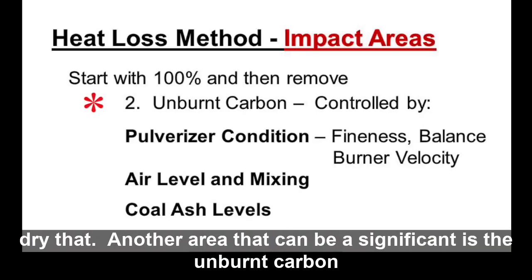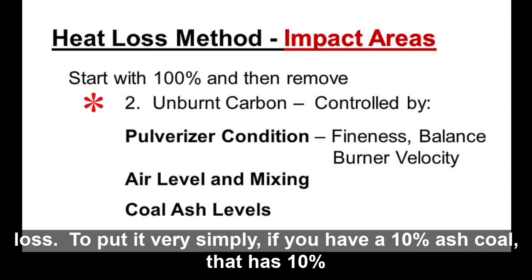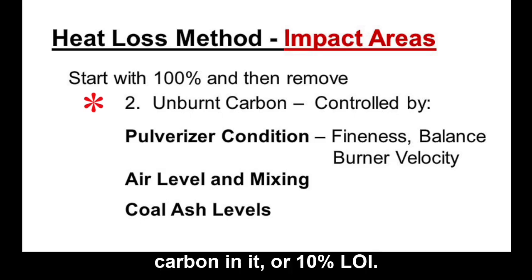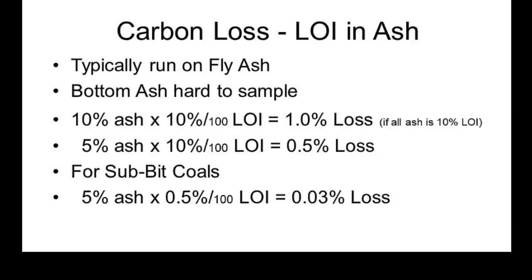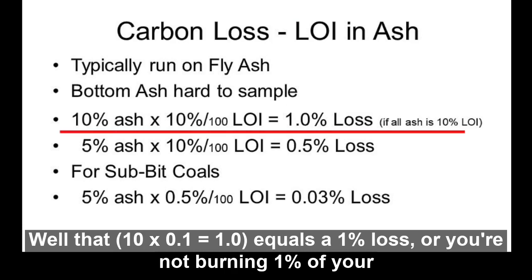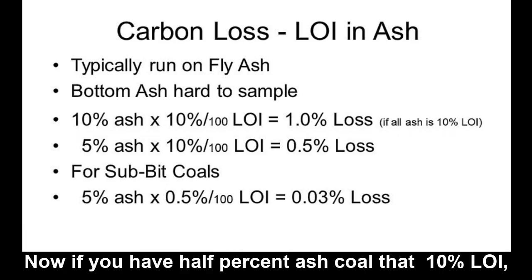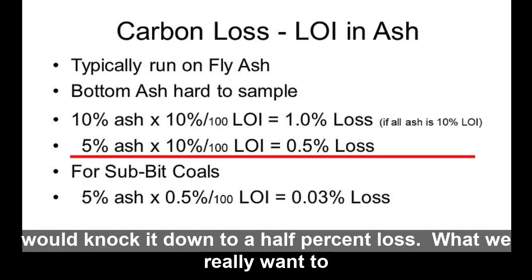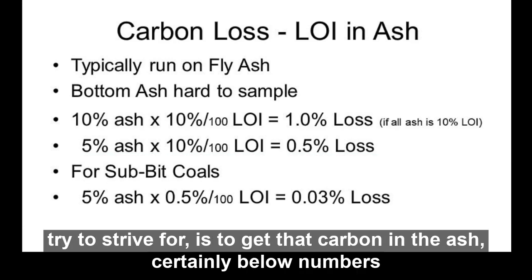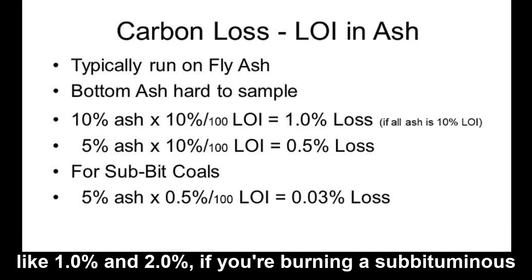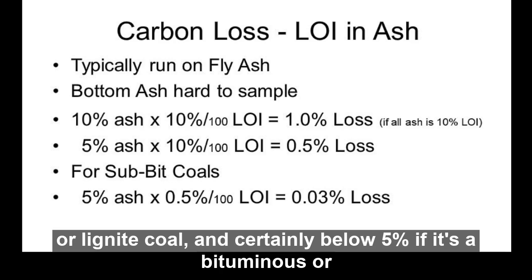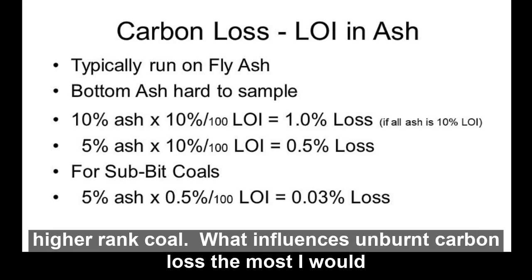The unburnt carbon loss is significant. To put it simply: if you have a 10 percent ash coal with 10 percent LOI, that's 10 times 0.1 equals a one percent loss — you're not burning one percent of your coal. If you only have five percent ash coal, that same 10 percent LOI drops to a half percent carbon loss. We want to strive to get carbon in the ash below one to two percent for sub-bituminous or lignite coals, and certainly below five percent for bituminous or higher rank coals.